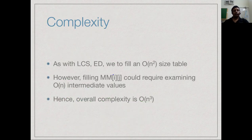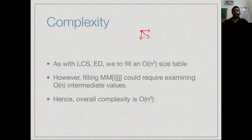We are filling an O(n²) table, but unlike longest common subsequence or edit distance — where each entry required only a constant number of lookups — here each entry may require scanning an entire row and column, taking O(n) time. So the total complexity is O(n³). This illustrates that the complexity of a dynamic programming algorithm is not just the table size but also the effort to fill each entry.